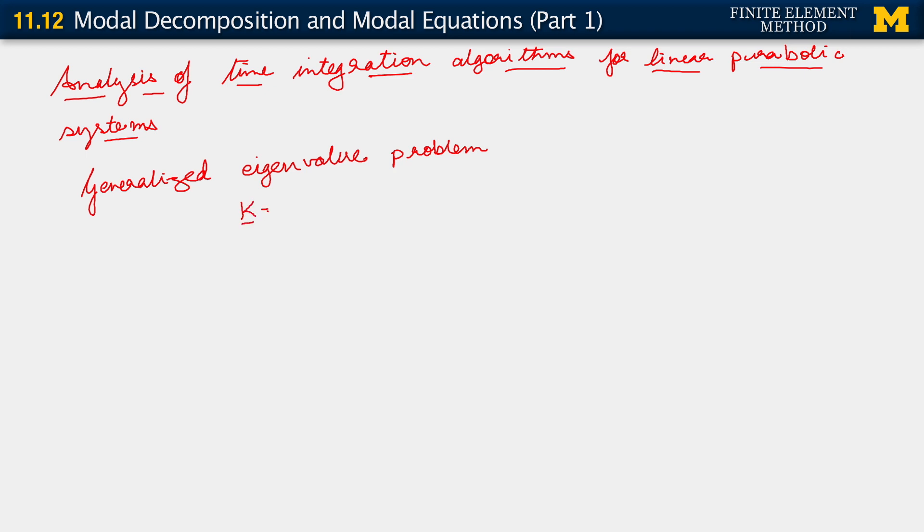That generalized eigenvalue problem takes on the form K psi m equals lambda m M psi m, where K is our conductivity or diffusivity matrix, M is our mass matrix. This is the basis for it.